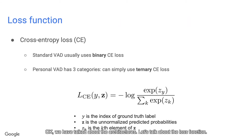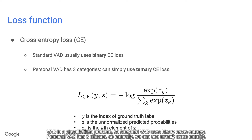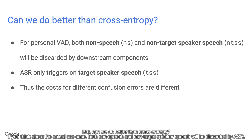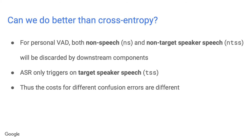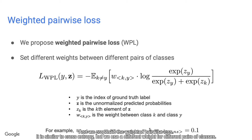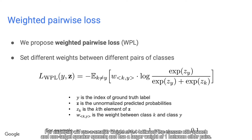Now let's talk about the loss function. VAD is a classification problem, so standard VAD uses binary cross-entropy. Personal VAD has three classes, so naturally we can use ternary cross-entropy. But can we do better? If you think about the actual use case, both non-speech and non-target speaker speech will be discarded by ASR. So if you make a prediction error between those two classes, it's actually not a big deal. We can include this knowledge in our loss function, and we propose the weighted pairwise loss. It is similar to cross-entropy, but we use a different weight for different pairs of classes — a smaller weight of 0.1 between non-speech and non-target speaker speech, and a larger weight of 1 between other pairs.